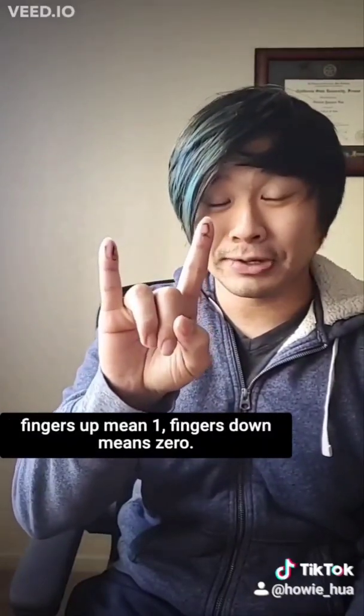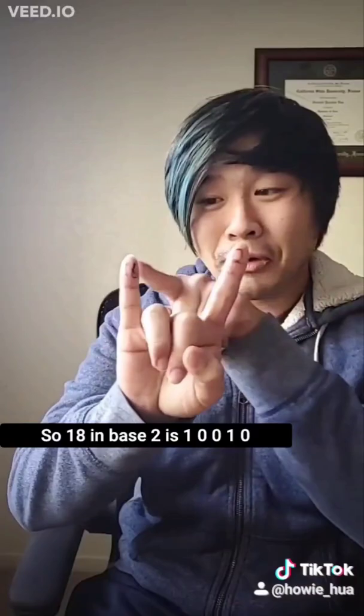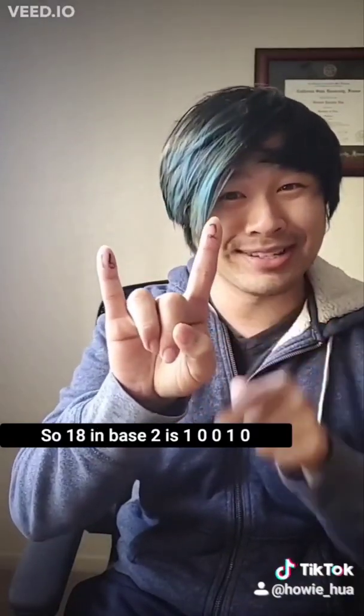So if you want to write 18 in base 2, that's 16 plus 2. Fingers up mean 1, fingers down mean 0. So 18 in base 2 is 1, 0, 0, 1, 0.